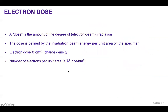When we talk about electron dose, a dose is nothing but the degree of electron beam irradiation. The dose is generally defined by the irradiation beam energy per unit area on the specimen, typically expressed in coulombs per square centimeter. We can control electron dose by controlling the number of electrons per unit area, usually represented as electrons per square angstrom or per square nanometer.